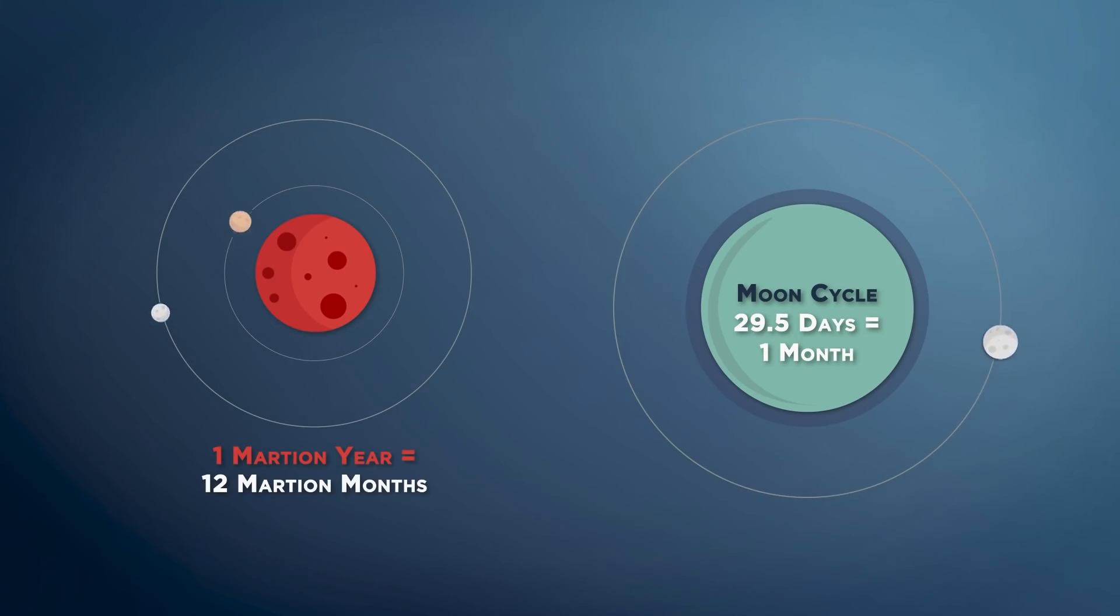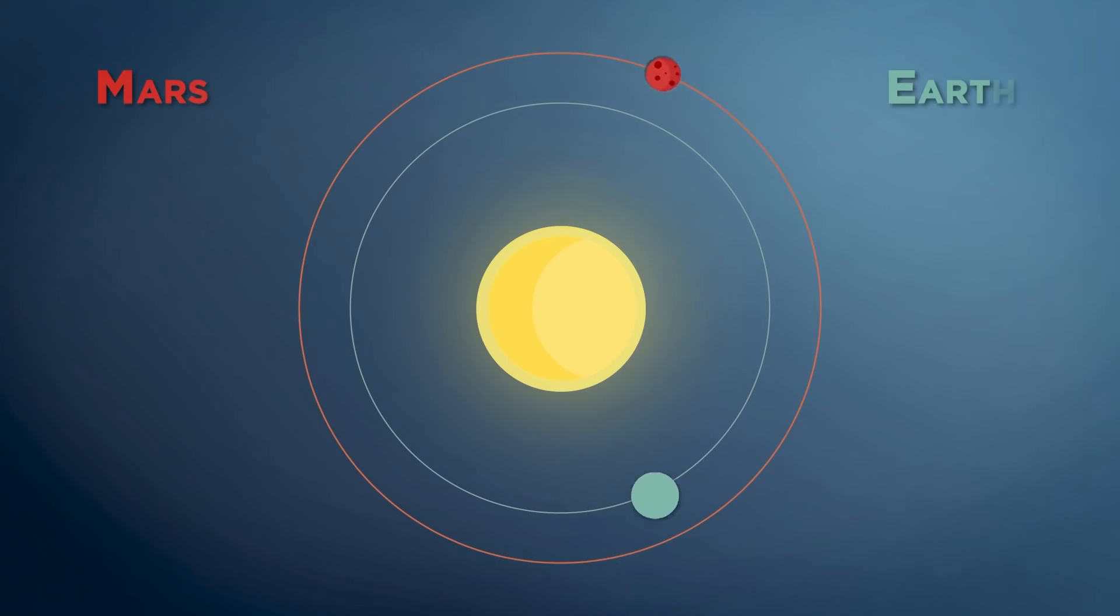But what really starts to get crazy, however, is when we add up these months and begin to compare the Earth year to the Mars year in its entirety. In astronomical terms, a year is the time it takes for a planet to make one trip around the Sun. While the Earth takes roughly 365.25 days to make this journey, hence the leap year every four years, the Mars year is nearly double that time at 687 Earth days, or converted to Mars days, 669.